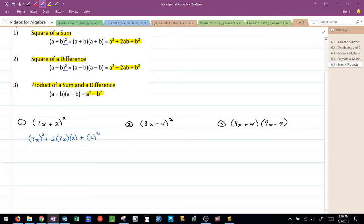This is a shortcut to helping us do these multiplications. When I do that, I get 49x² plus 28x plus 4.